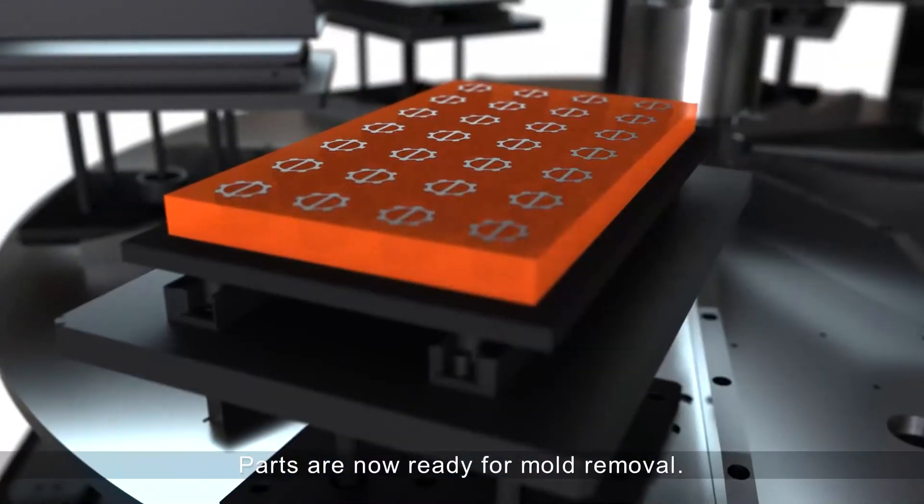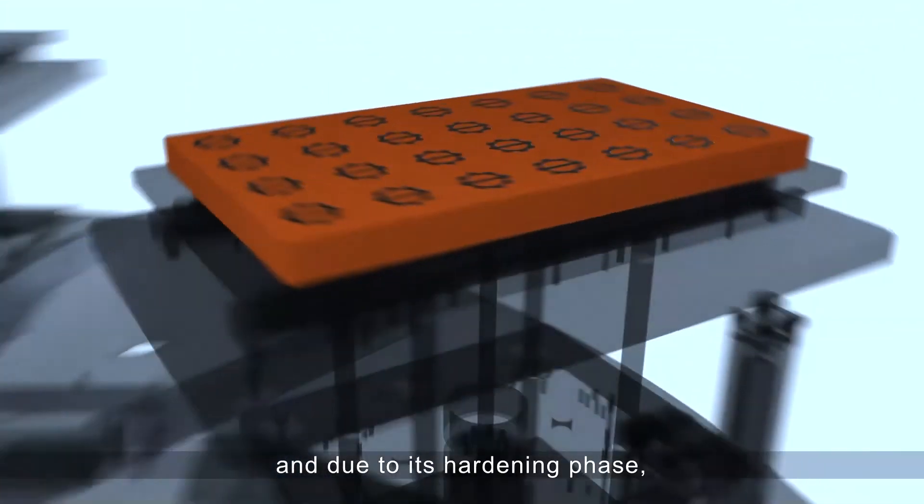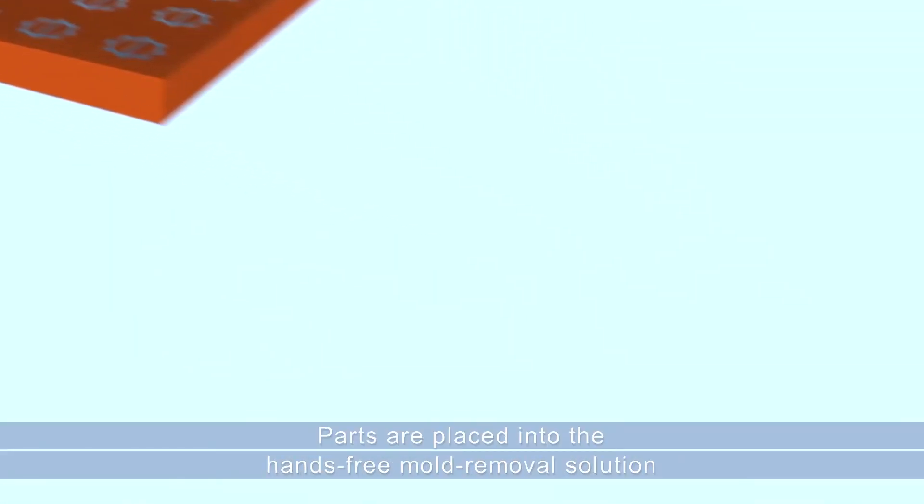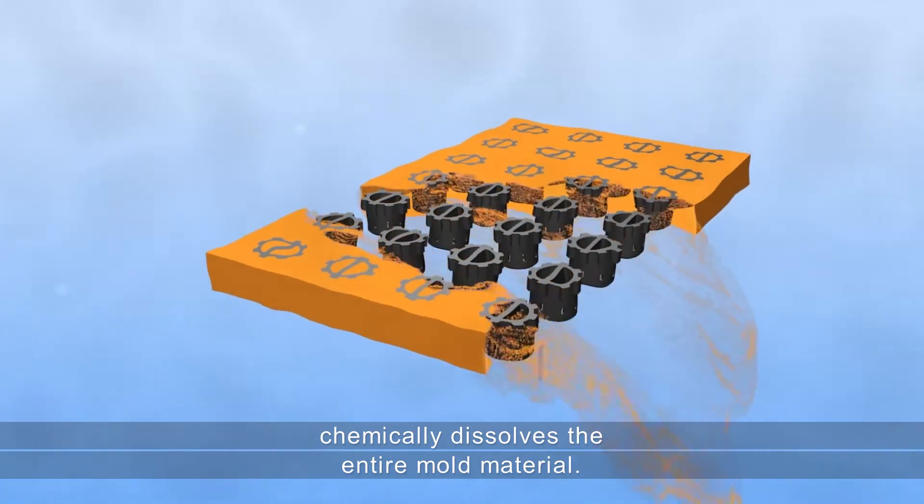Parts are now ready for mold removal. The parts are removed from the tray and due to the hardening phase, it is safe to continue the process. Parts are placed into a hands-free mold removal solution, which chemically dissolves the entire mold material.